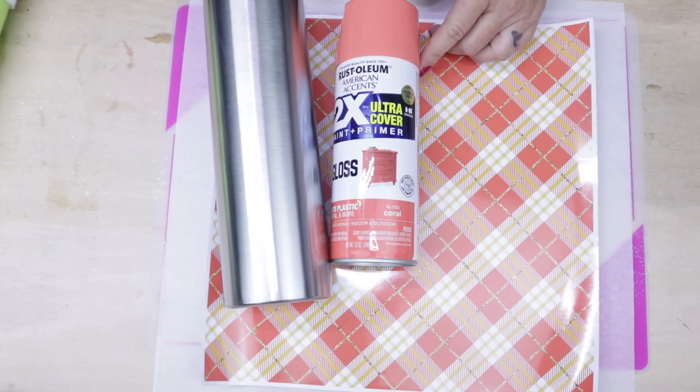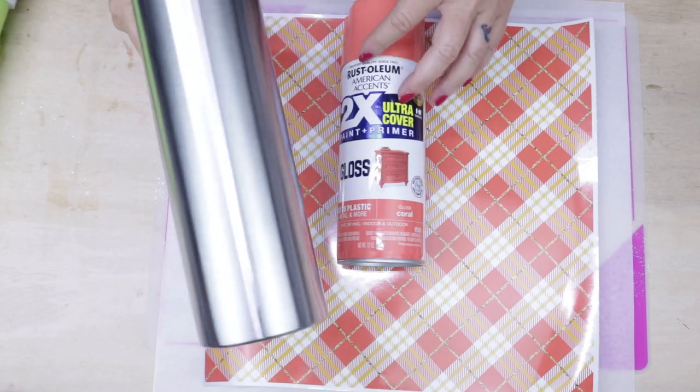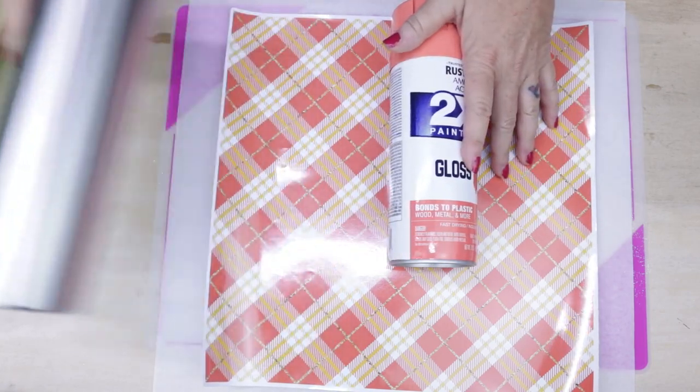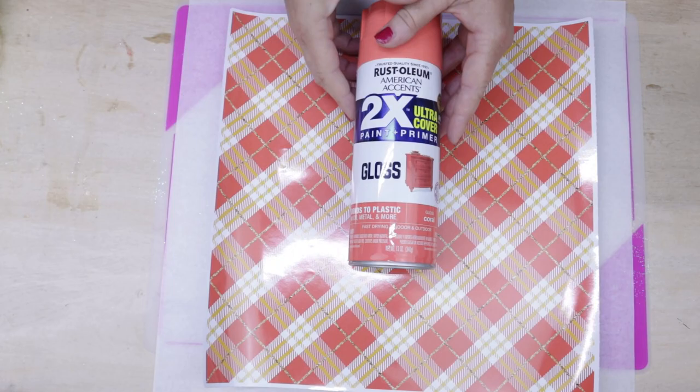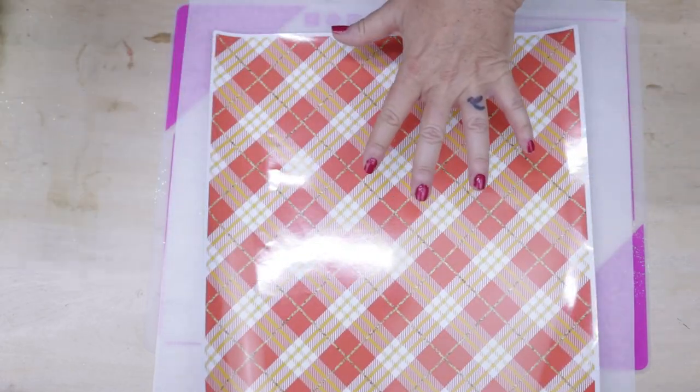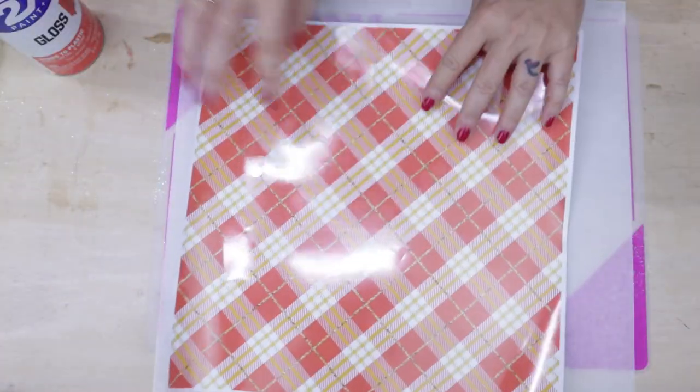Hello, welcome back to Everything Tumbler Tutorials. My name is Rebecca Escott, and today I'm going to show you another fun fall tumbler using vinyl, spray paint, and glitter. This is going to be one of the easiest tumblers, I'm hoping you guys will agree. So this is the 12 by 12 sheet.